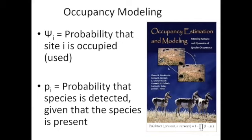In the basic occupancy model we'll run today, we have two parameters of interest: psi (ψ), the probability that a site is occupied or used by your species, and p, the probability that the species is detected given that it is present. This is our way of robustly accounting for our inability to detect a species even when it's actually there.